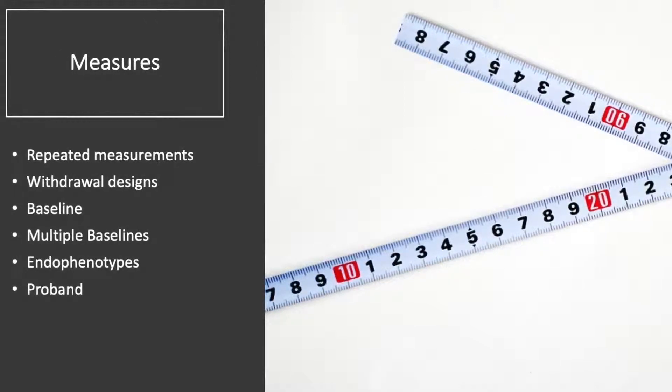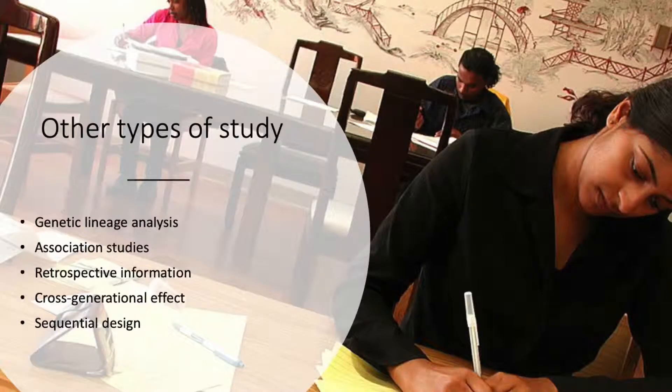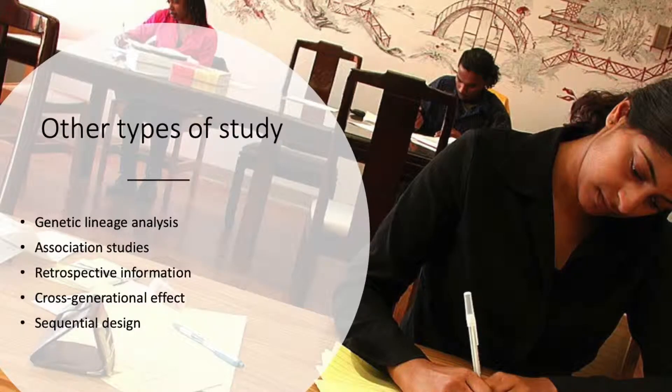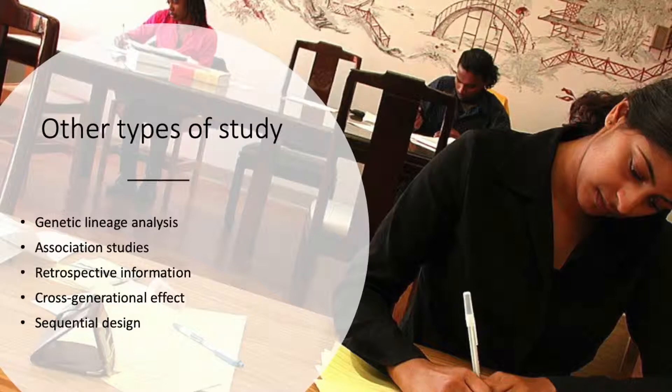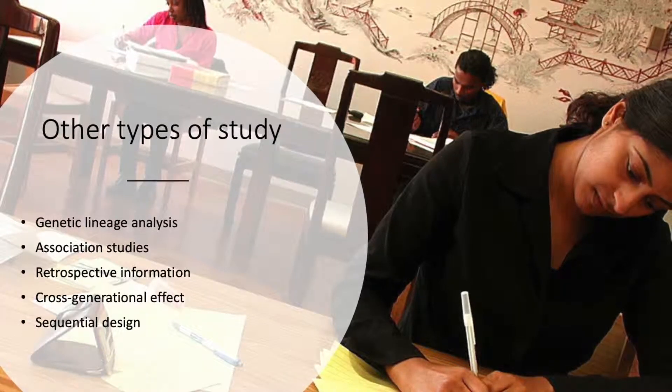Proband is a trait singled out in an individual within a family study. There's genetic lineage analysis which is where researchers look for genetic markers or location and then they assess how the trait is passed down. They compare large groups of people.